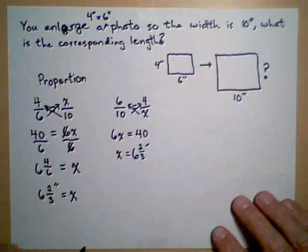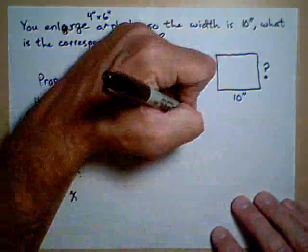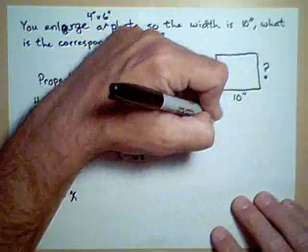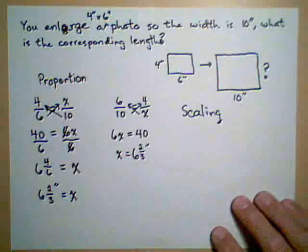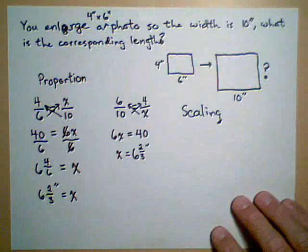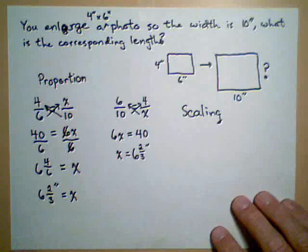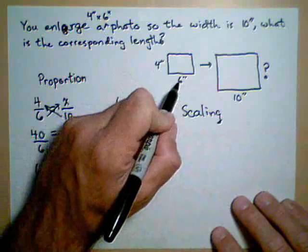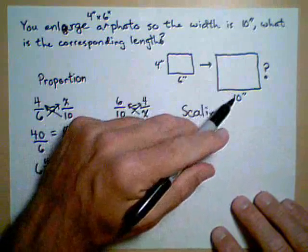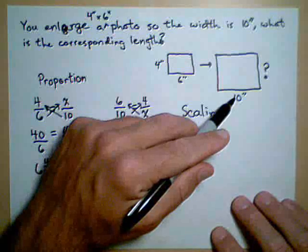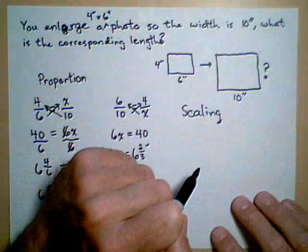A third way of solving these kind of problems is called scaling. What scaling involves is looking at the scaling factor of going from one photo to the other. This can actually be thought of as a percent increase as well. So the question is, what is 6 getting multiplied by in order to get 10? We're going to look for that scaling factor.